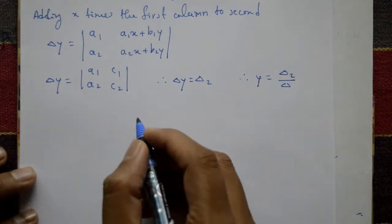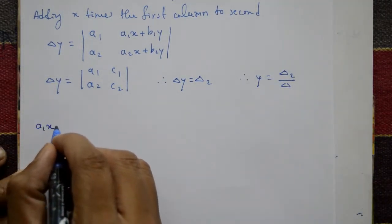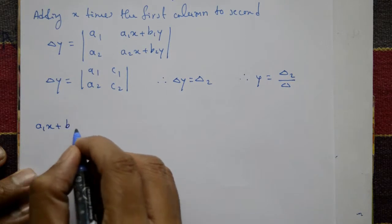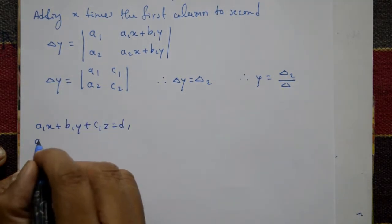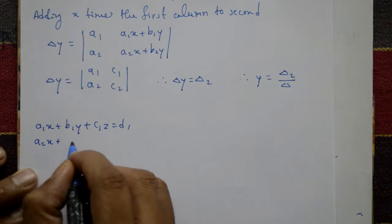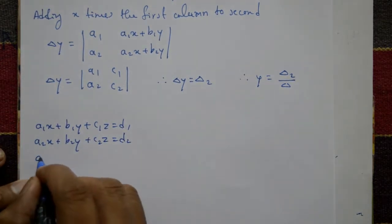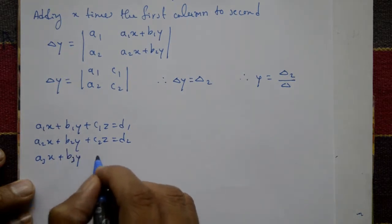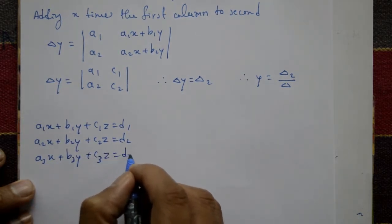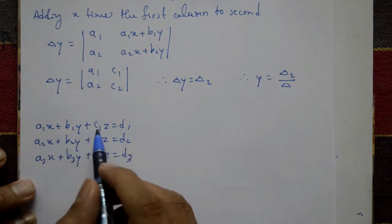Now consider the same case with three variables: a1x plus b1y plus c1z equals d1, a2x plus b2y plus c2z equals d2, and a3x plus b3y plus c3z equals d3. Three unknown variables x, y, z.